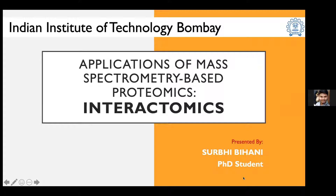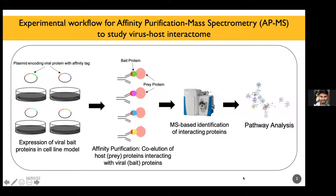For talking about SARS-CoV-2, this application of mass spectrometry-based proteomics is interactomics, which, as the name suggests, looks at the interactions of proteins. For identifying what proteins the viral proteins are interacting with, this is called affinity purification mass spectrometry. The workflow includes expressing viral proteins along with an affinity tag in a cell line model, using the affinity tag to pull down that protein and the interacting proteins along with the viral proteins, then identifying the interacting proteins using mass spectrometry and further pathway analysis.